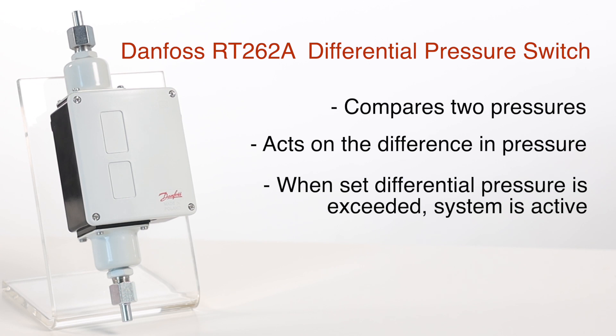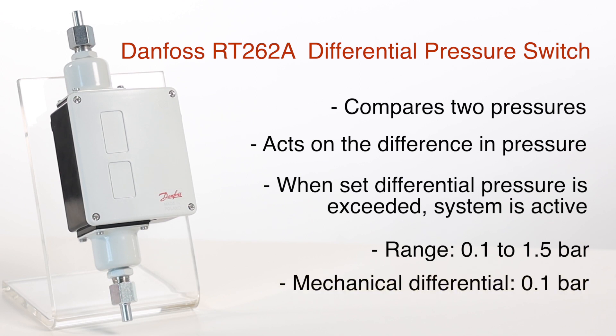In our example, we'll be demonstrating how to set up a Danfoss differential pressure switch for falling pressure applications. We've chosen an RT262A with a measuring range of 0.1 to 1.5 bar and a mechanical differential of 0.1 bar.